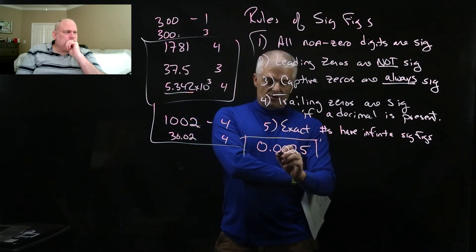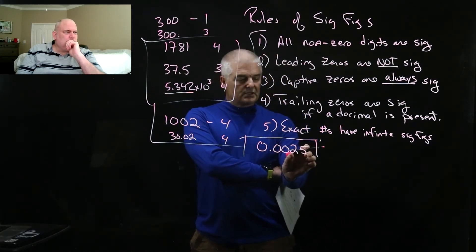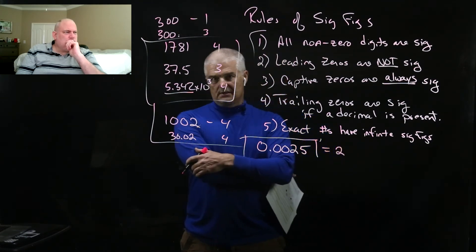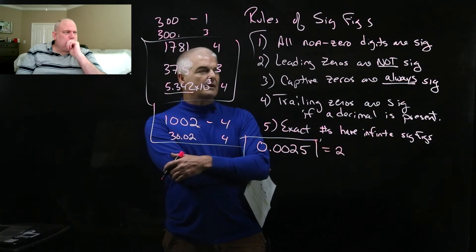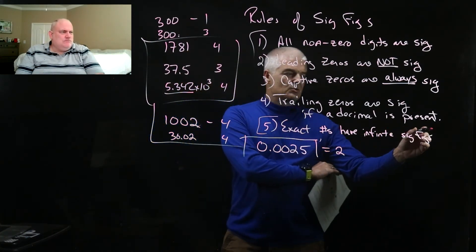And so those leading zeros, those are one, two. Do you see? The deal is those don't count. So the only significant digits here are the two and the five. So this has only two significant digits. That is one I think that trips people up the most.